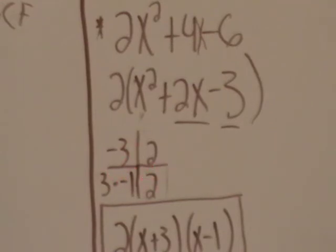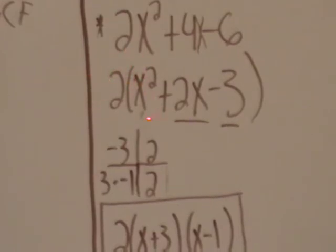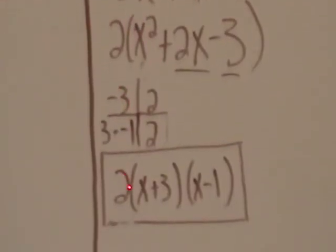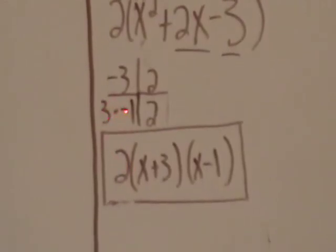So you see, remembering that this 2, we can just kind of pretend it's not there because it's going to stay out in front for the remainder of our equation. And we just drop it down. And we use these numbers the same way we did last time and put an x in front of it.